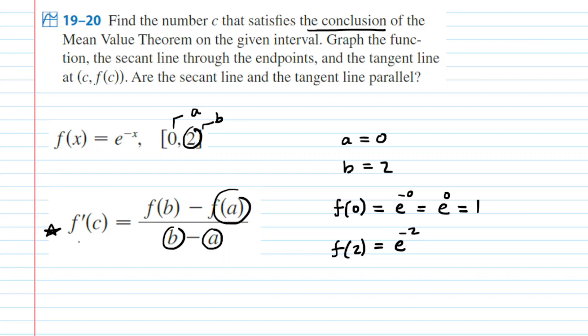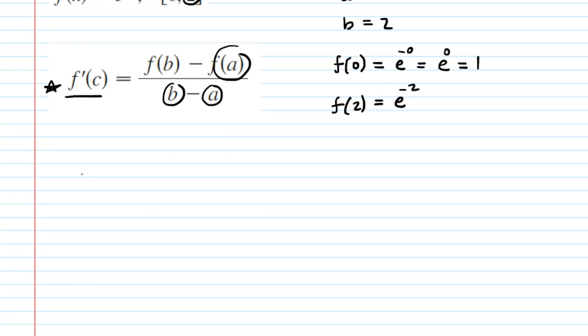Now the fifth thing that we need is the f prime of c, but we don't have that yet. We only have the f function, we don't have f prime, so in order to get f prime we're going to have to step aside and calculate the derivative.